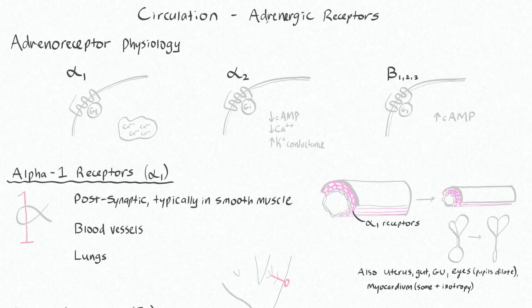This is going to be some basic information you need to know about adrenergic receptors, and then some practical tips about medications that we use as vasopressors and inotropes. I've drawn out some of these receptors, and it's basically just good to know that you'll have binding of an agonist to this receptor, and then it affects some intracellular change.